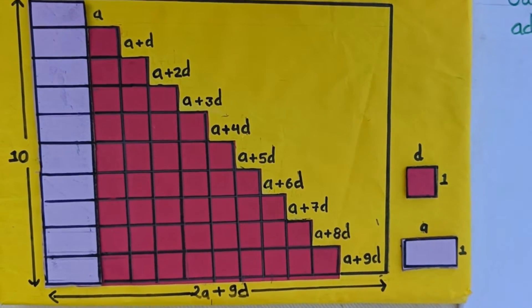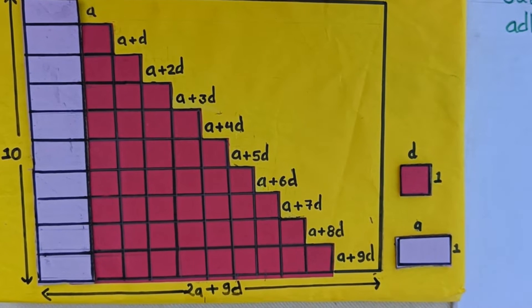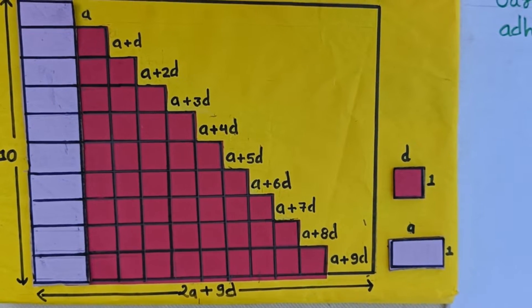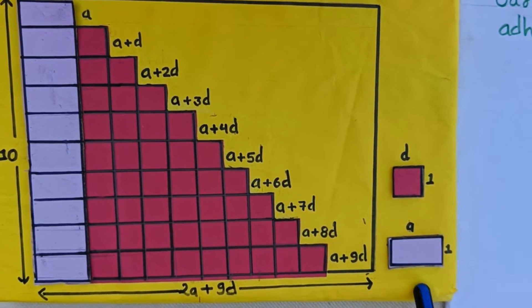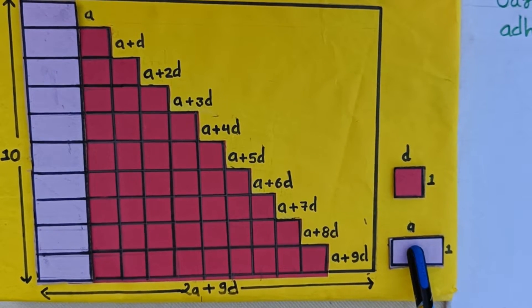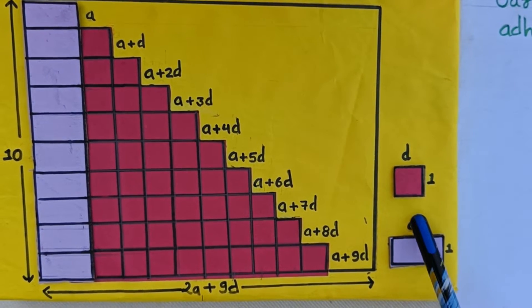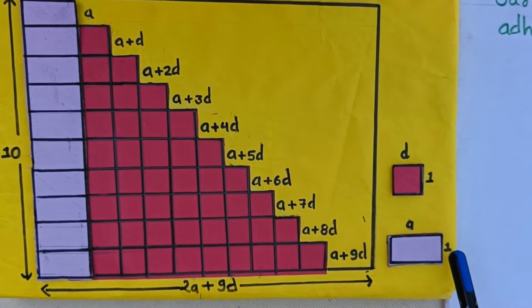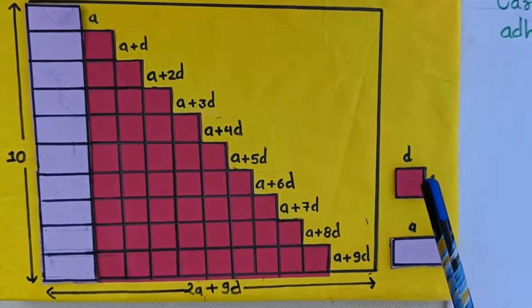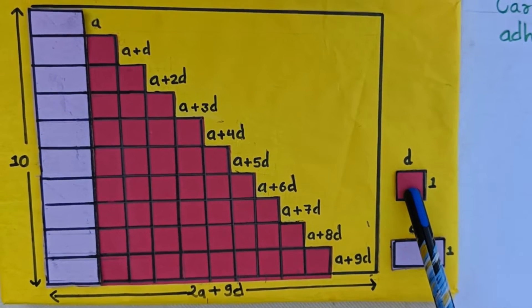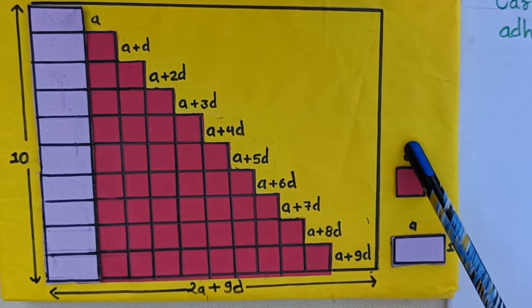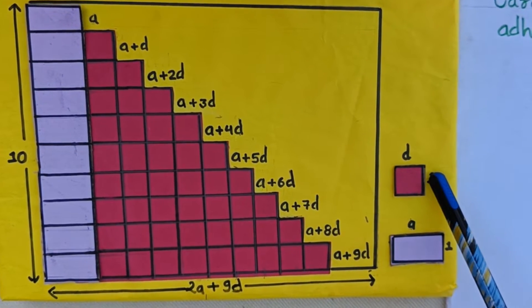The number of terms n is equal to 10. Here we have taken a yellow cardboard and pasted purple color rectangles, each of length a unit and breadth 1 unit. We have also taken red color square boxes of length 1 unit and breadth 1 unit.